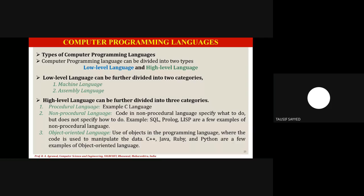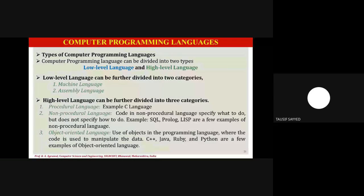Today we will discuss types of computer programming languages. A computer program, to summarize, is a set of instructions which are coded in order to receive some particular output. Whatever output the user wants from the system, we develop code for that, and that code is called a program. Every program must follow certain rules and regulations given by the programming language construct itself.